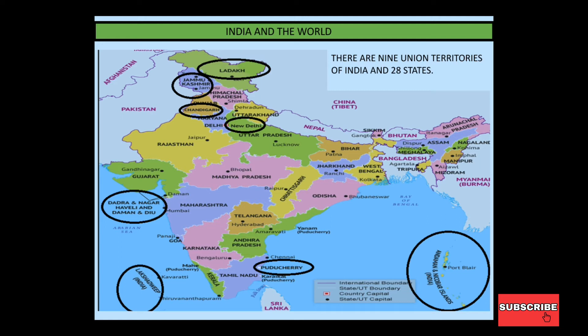Who are the Union Territories? At the top in the north: Jammu Kashmir and Ladakh. Then a little further down: Chandigarh. The fourth one is New Delhi. The fifth one on the coastal side: Dadra and Nagar Haveli. Then Daman and Diu. Further down: Lakshadweep. On the east side: Puducherry. And then Andaman and Nicobar.